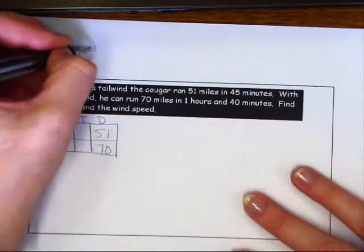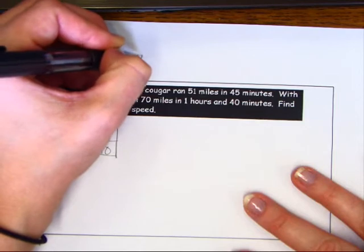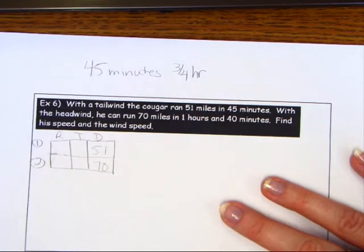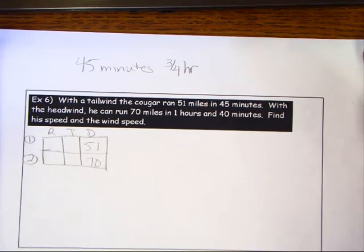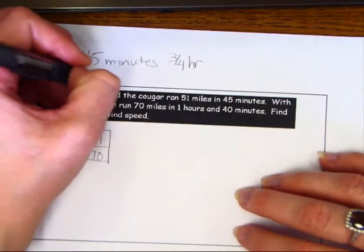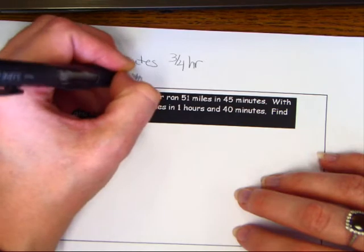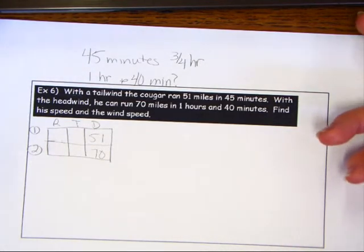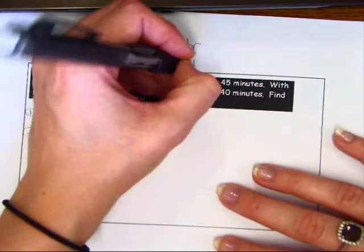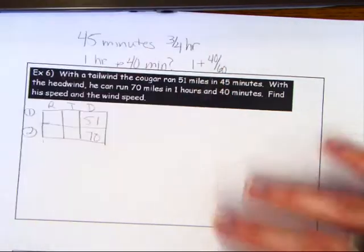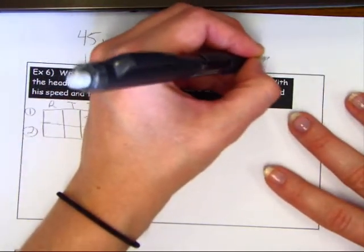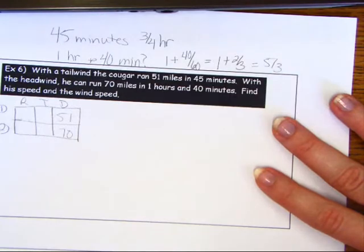We have to be careful with the time. 45 minutes is three-fourths of an hour. One hour and 40 minutes — since we're working in miles per hour — needs to be converted to hours: one plus 40/60, which is one plus two-thirds, giving us five-thirds of an hour.